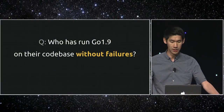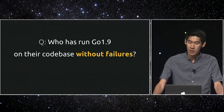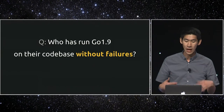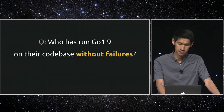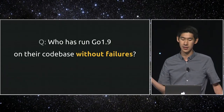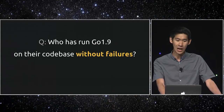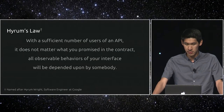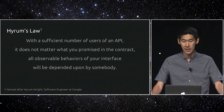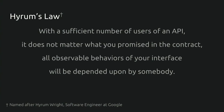Some important goals for Go are stability and development scalability. In theory, the team of worldwide contributors developing Go should be able to improve the toolchain without breaking the code of those who depend on it. However, in practice, as we see here today, that is not always the case. What's going on is an observation that we, at Google, call Hyrum's Law. Hyrum's Law reads: with a sufficient number of users of an API, it does not matter what you promised in the contract — all observable behaviors of your interface will be depended upon by somebody.